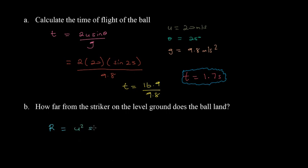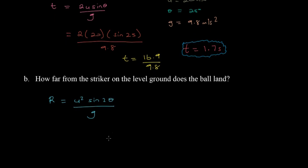Now we can plug our values in. u is 20, so we're taking 20 squared, sine 2θ which is 50 since θ is 25, so 2 times 25 is 50, and we divide that by g which is 9.8.